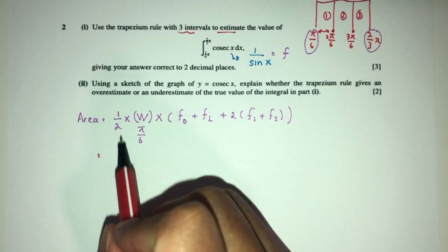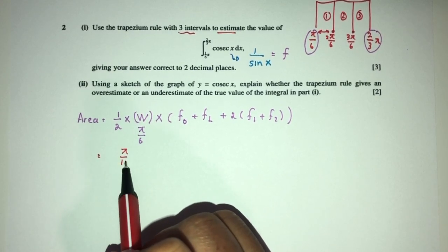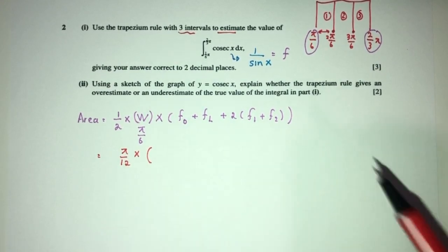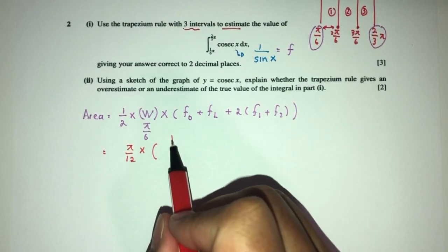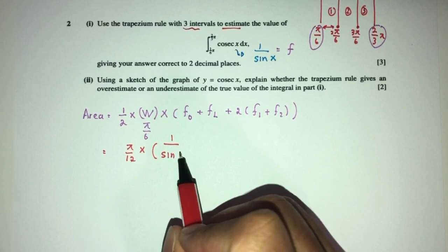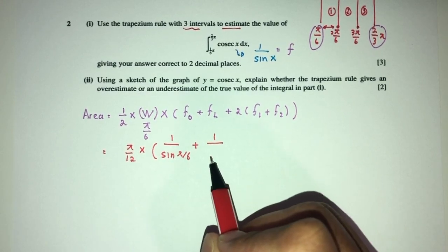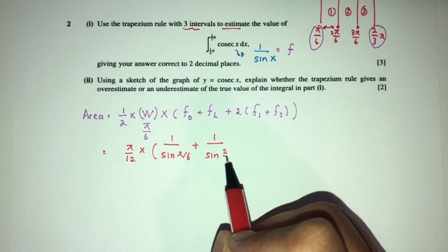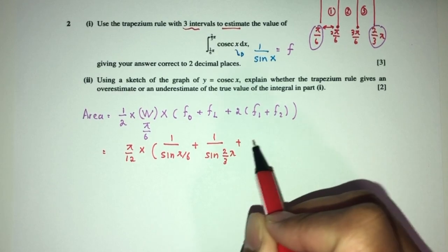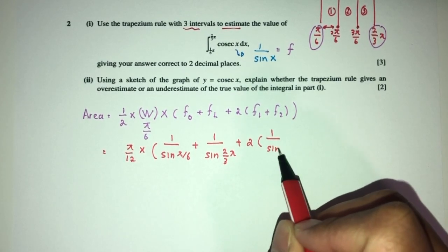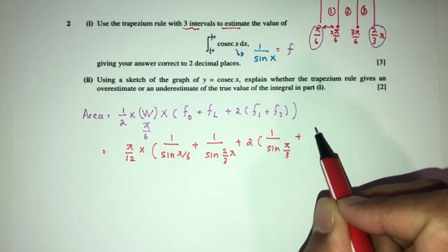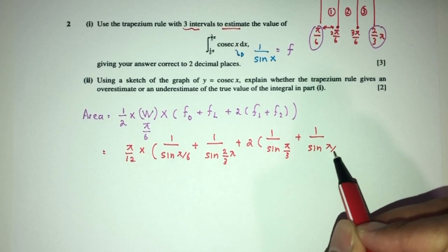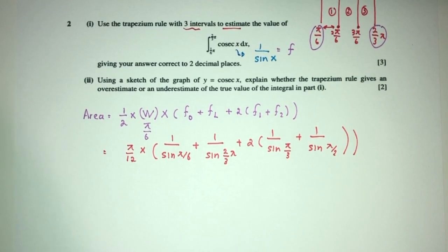The area is half times the width of the trapezium which is π/6 times f(0) plus f(last one) plus 2 times f(1) and f(2). Now I'm calling this function f for now. Let's replace the values back in my main equation. Now part 1 is half, that should be π/12.